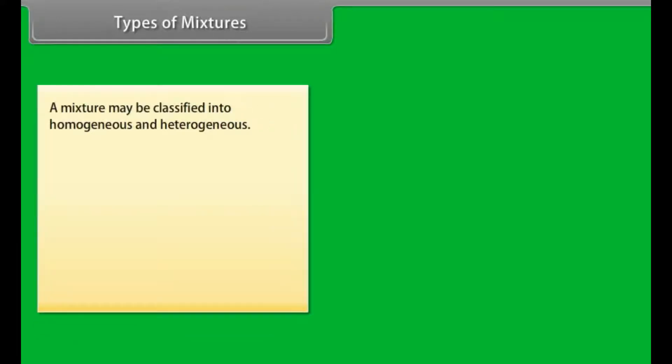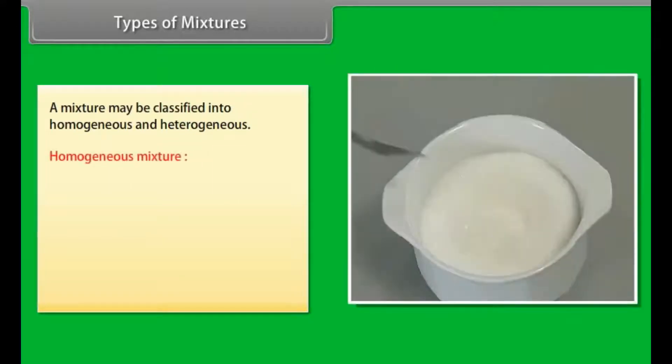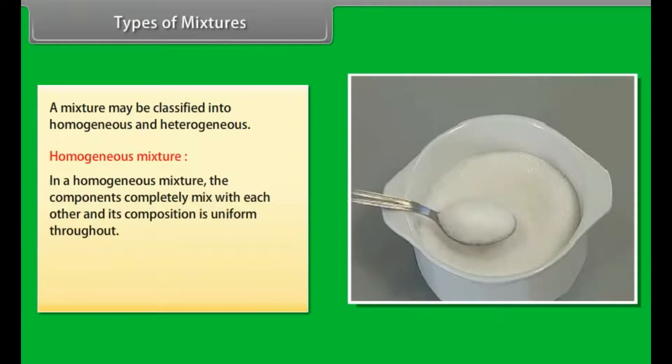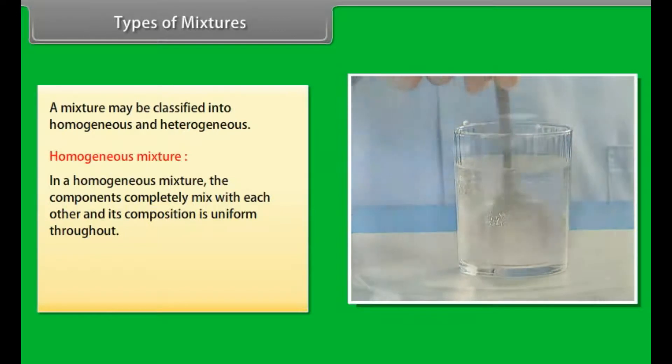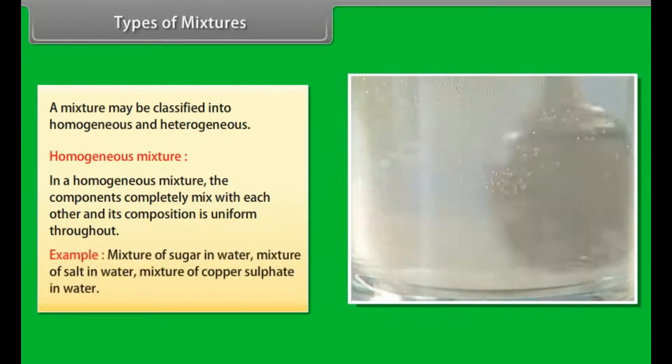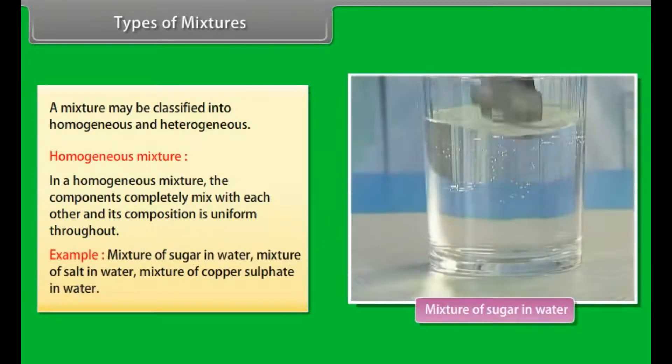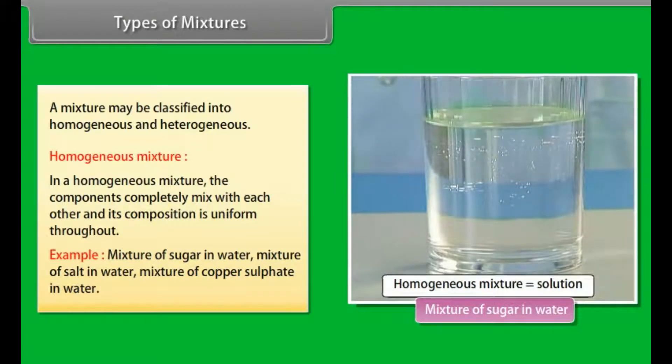Types of Mixtures: A mixture may be classified into homogeneous and heterogeneous. In a homogeneous mixture, the components completely mix with each other and its composition is uniform throughout. Examples: mixture of sugar in water, mixture of salt in water, mixture of copper sulphate in water.